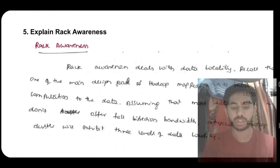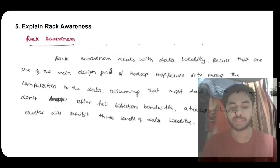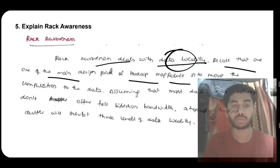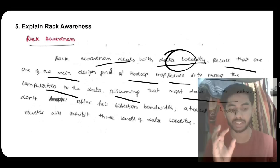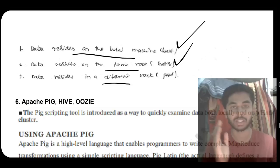The next important question is explain rack awareness. Rack awareness deals with data locality: where is the particular data stored, where is more accessible data stored. This is called data locality. One of the main design goals of Hadoop MapReduce is to make data computation easier, assuming that data in the center of the network is more accessible. You have to mention three levels.